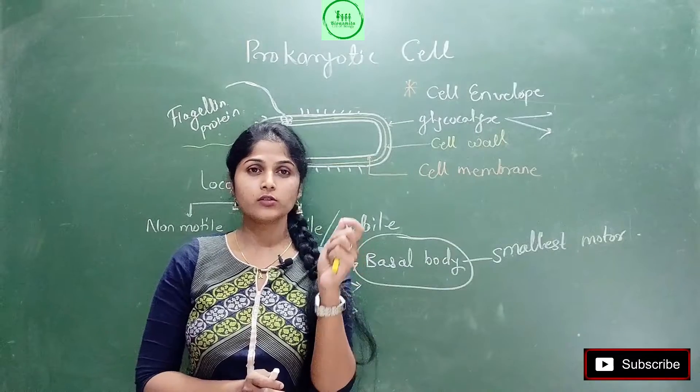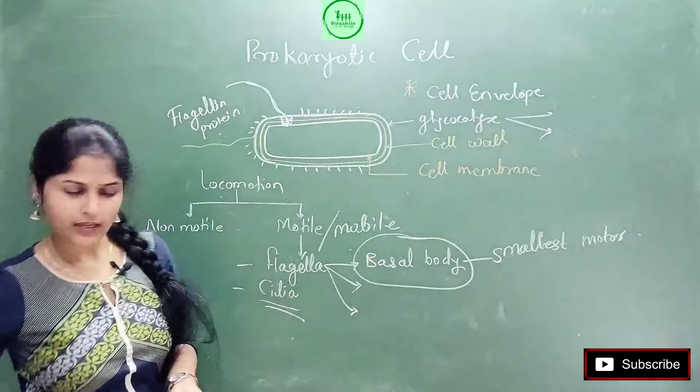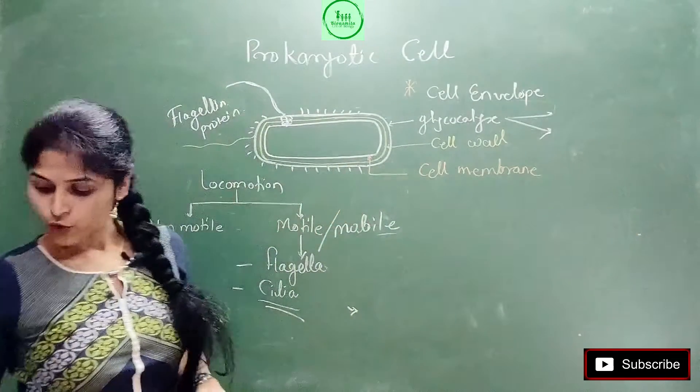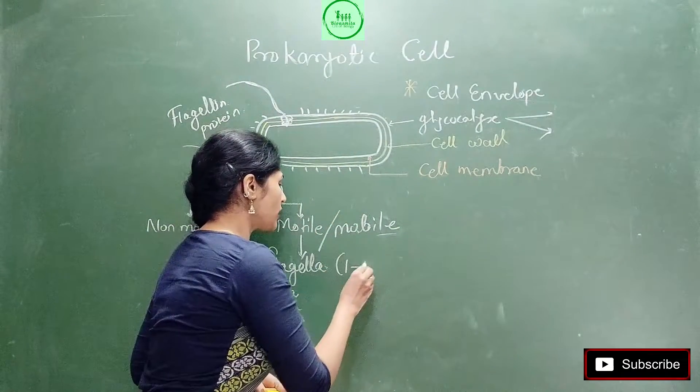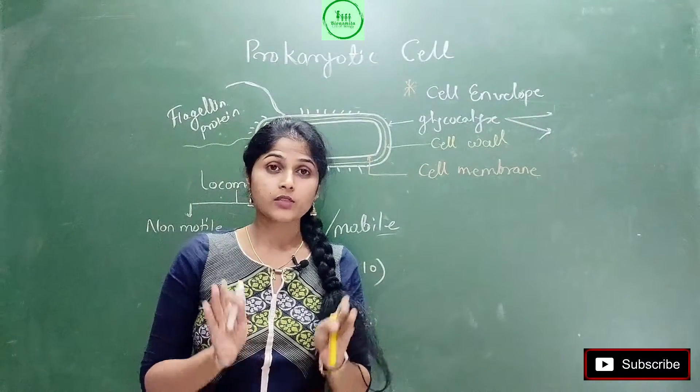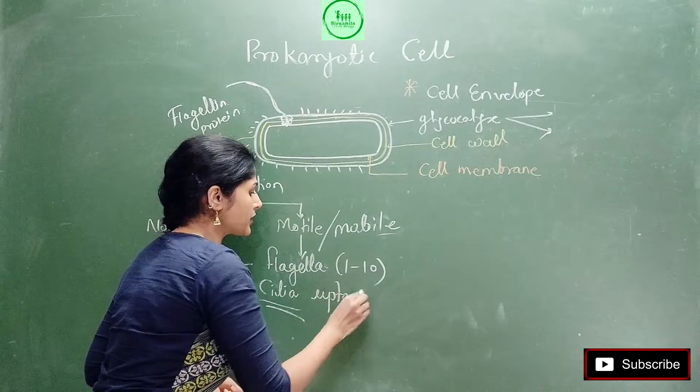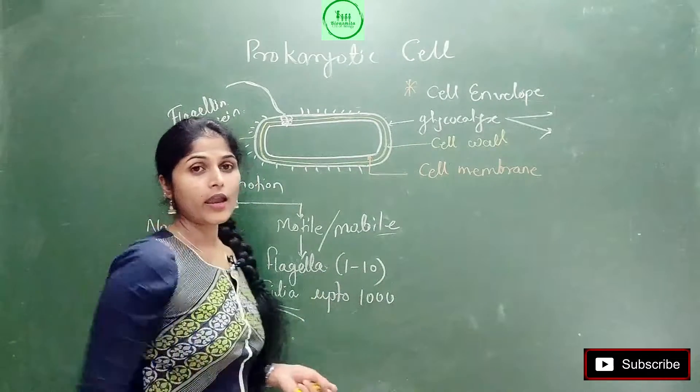The basic difference is about number. One bacteria has maximum or minimum, limited flagellas. Mostly 1 to 10 number of flagellas are there, only 1 to 10. But if we look at cilia, up to 1000 cilia can be present.